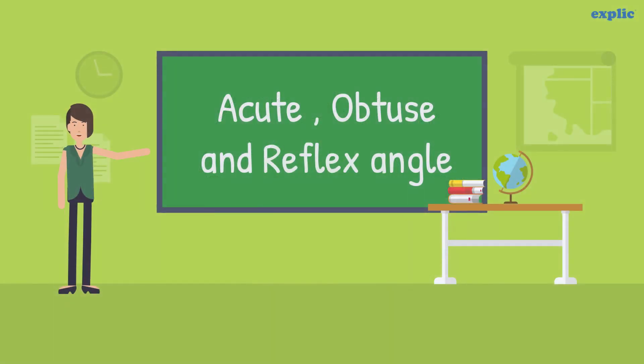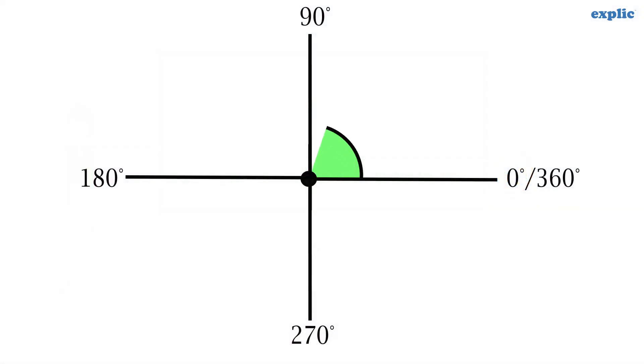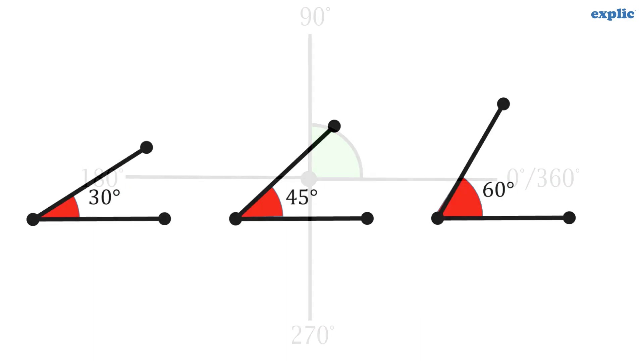An angle can also be classified based on measurements such as acute, obtuse, and reflex angle. An acute angle is an angle between 0 and 90 degrees, such as 30 degrees, 45 degrees, and 60 degrees.